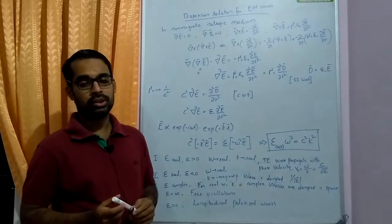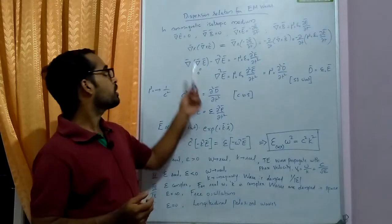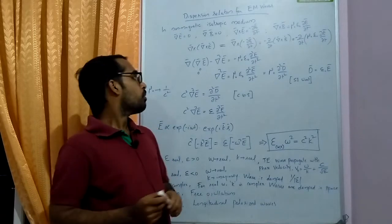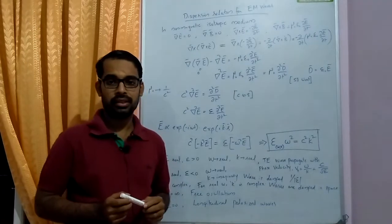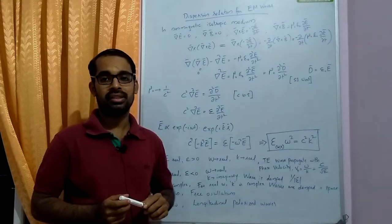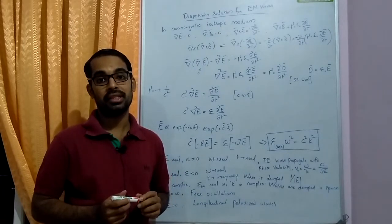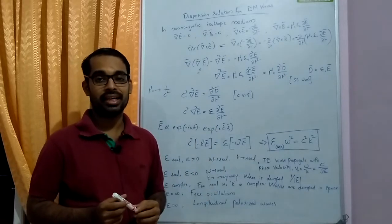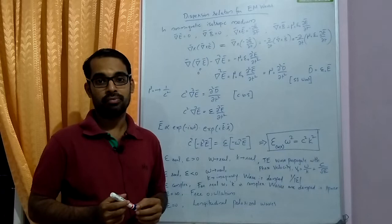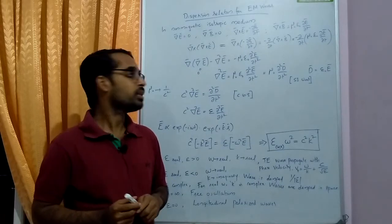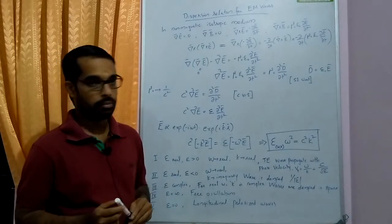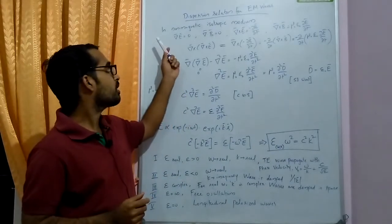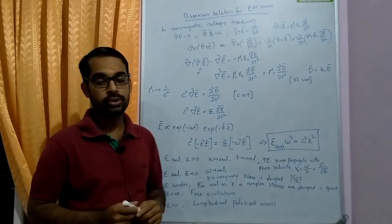Before going into detail about that, we need to discuss about the dispersion relation of electromagnetic waves. The dispersion relation actually describes how dispersion affects the propagation of electromagnetic waves in a medium, and it basically connects the wavelength or wave number with the frequency of the corresponding electromagnetic wave. In plasma medium, we consider it as a non-magnetic isotropic medium.